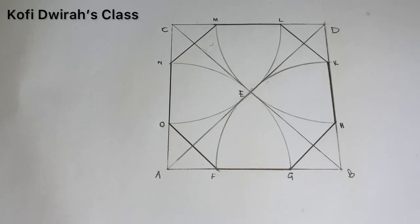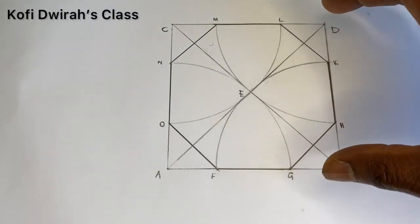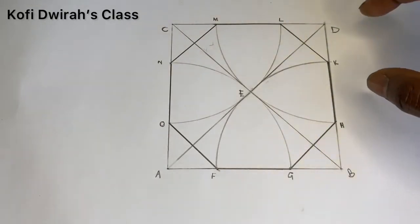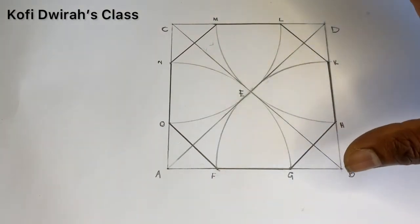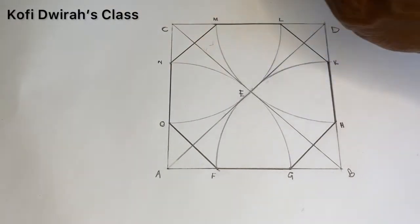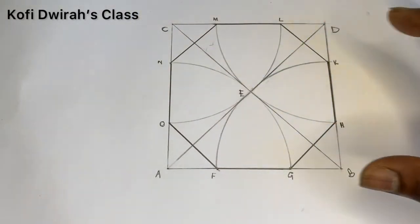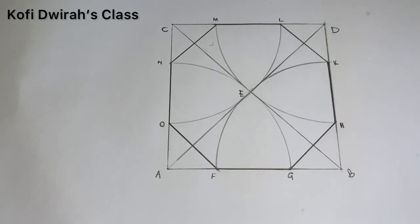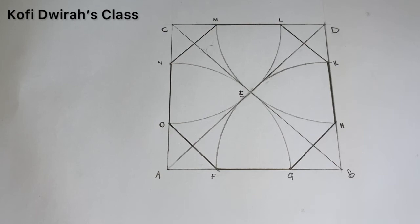So this is how to construct a regular octagon inscribed in a given square. The octagon is inscribed in the square — this is the square and this is the octagon. This is how to construct a regular octagon inscribed in a given square, or how to construct an octagon using a given square.